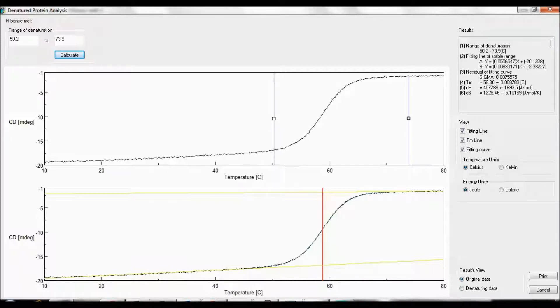You also can obtain a standard deviation of the fitting curve, as well as the melting temperature with its associated error, the change in enthalpy with its associated error, and the change in entropy with its associated error.